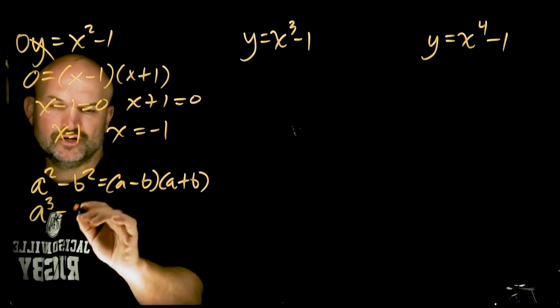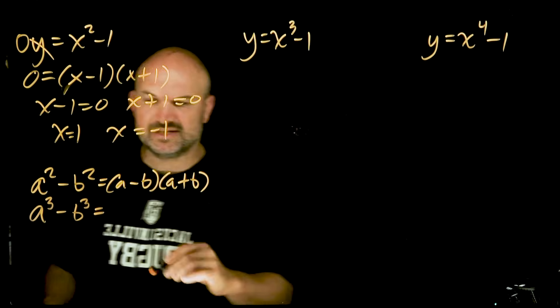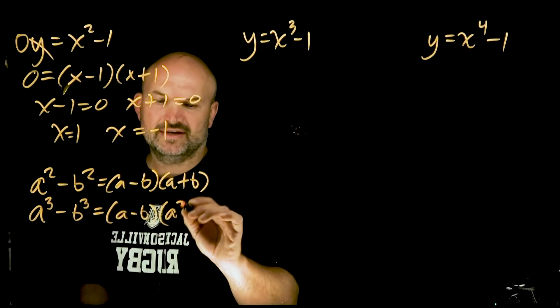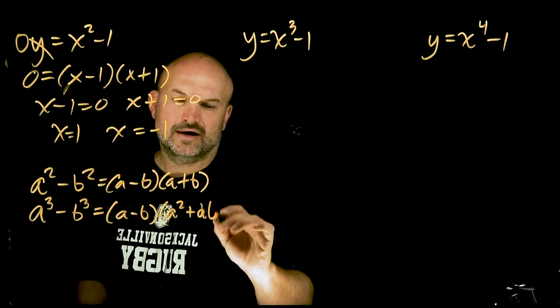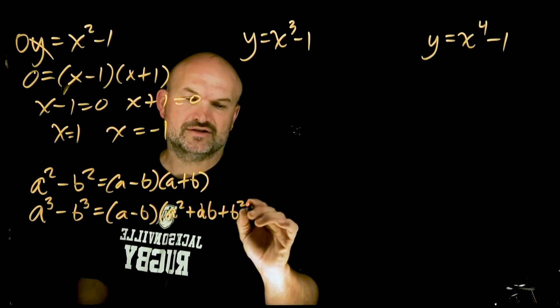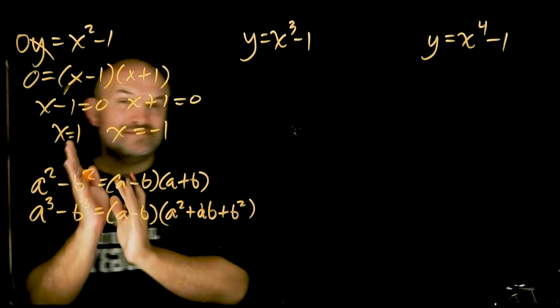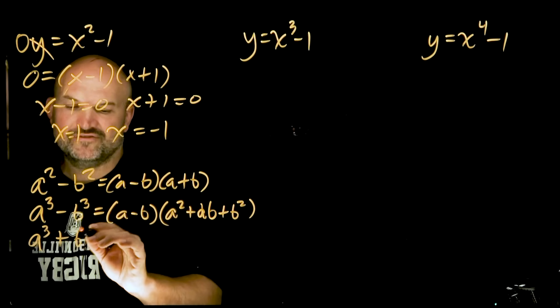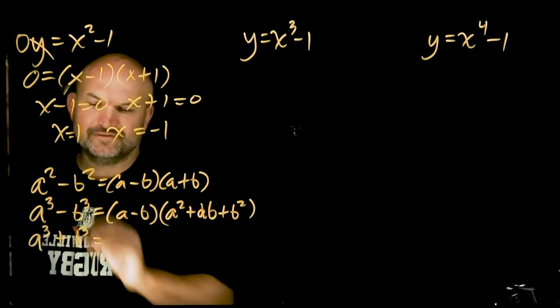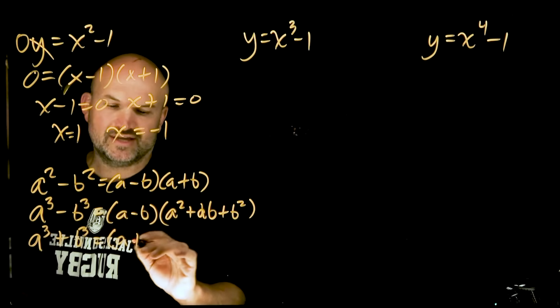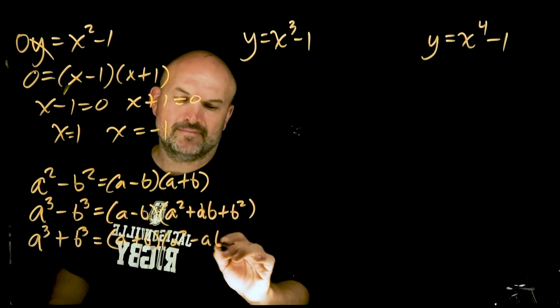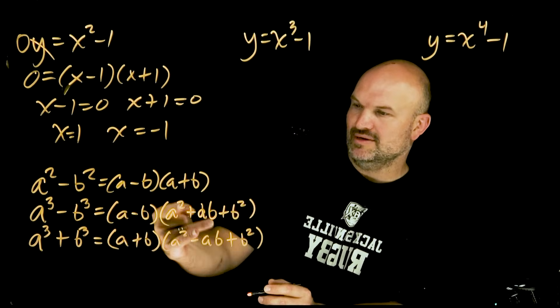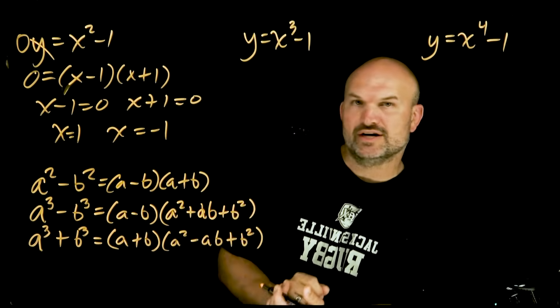The difference of two cubes is very similar to the difference of two squares, but it's going to look like this. We'll still have our a minus b, but then the other factor is going to have a squared plus a b plus b squared. We also have a sum of two cubes, and the difference is actually very similar. In this case, it looks like a plus b times a squared minus a b plus b squared. Just notice the signs are always going to be the same, and then we have the opposite sign over here in the trinomial.